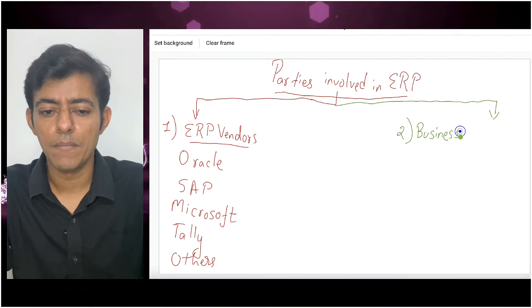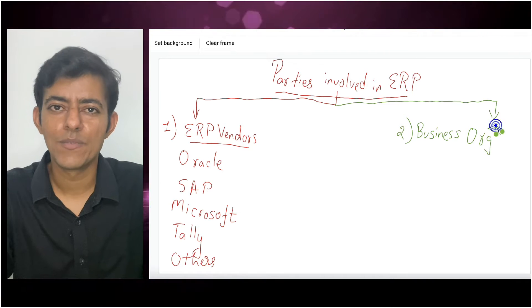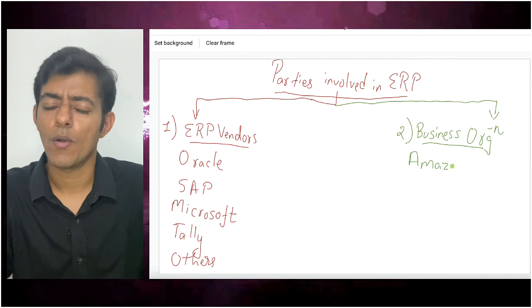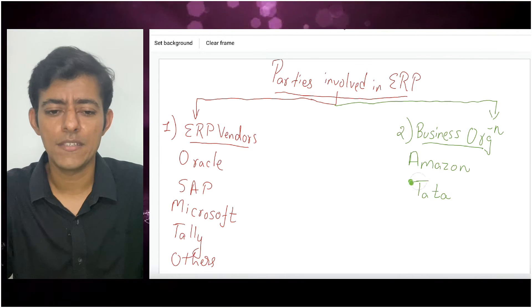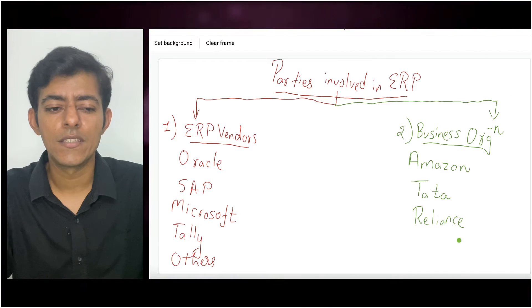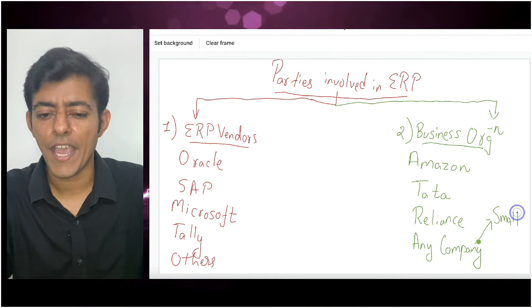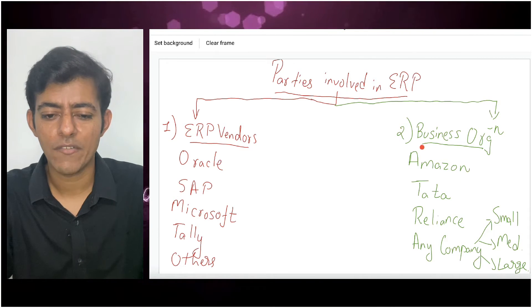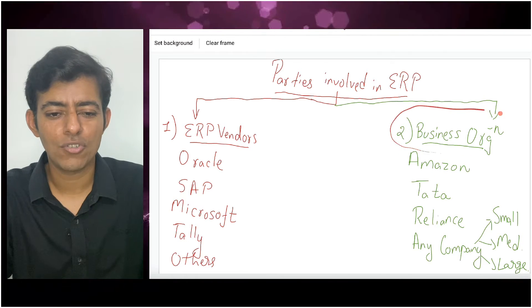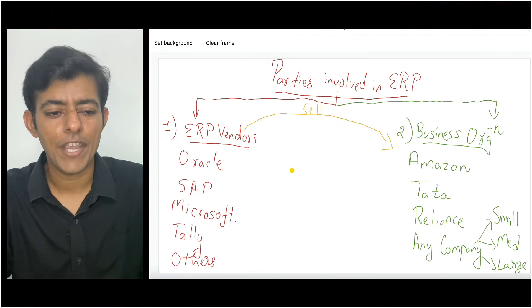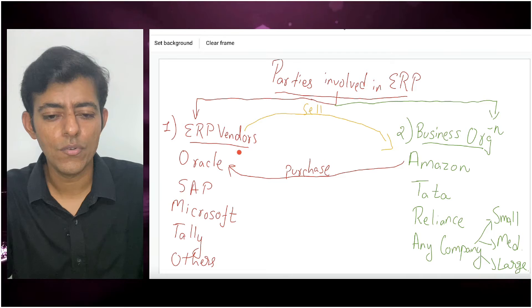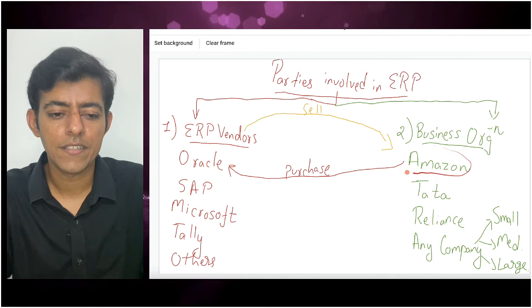Another party involved is the business organization. These ERP systems are used by business organizations — simply like any company, such as Amazon or Reliance. This ERP can be used by small, medium, or large organizations. Let's say Amazon purchases ERP from Oracle, and Oracle is selling their ERP to Amazon. This purchase is based on license, so Amazon has to pay a license fee for the usage of this ERP system. So these are the two parties: the ERP vendor and the business organization.